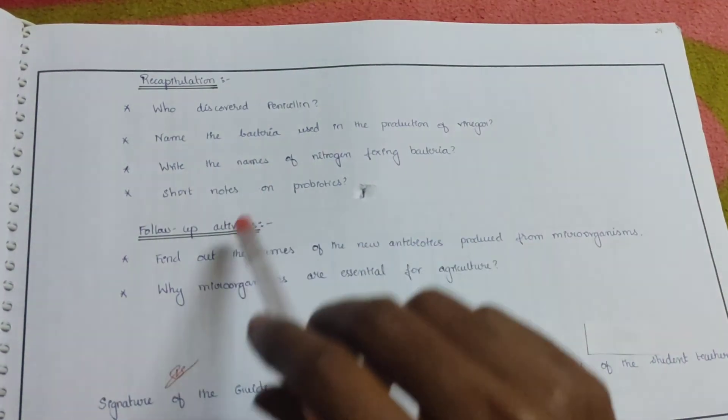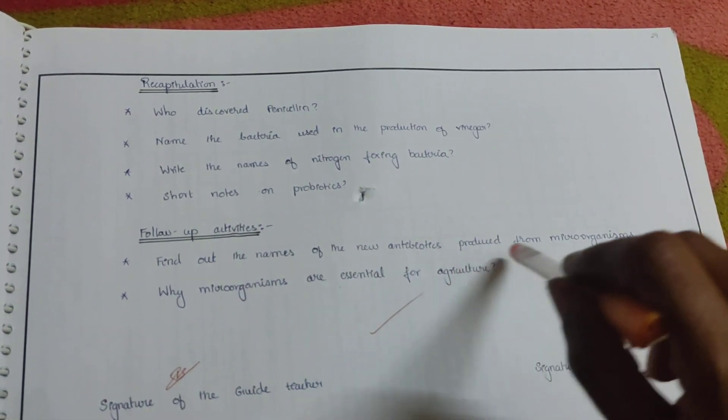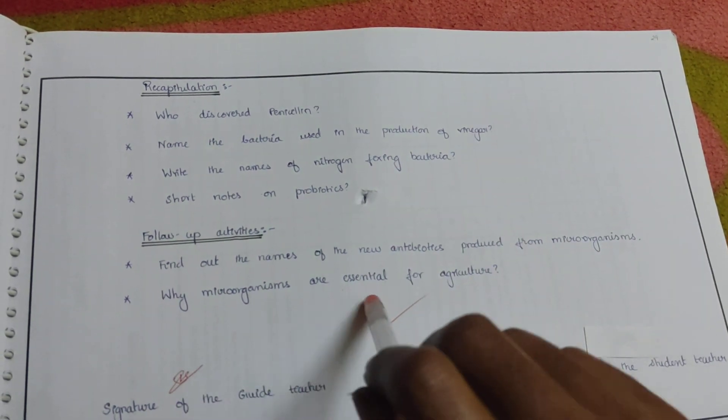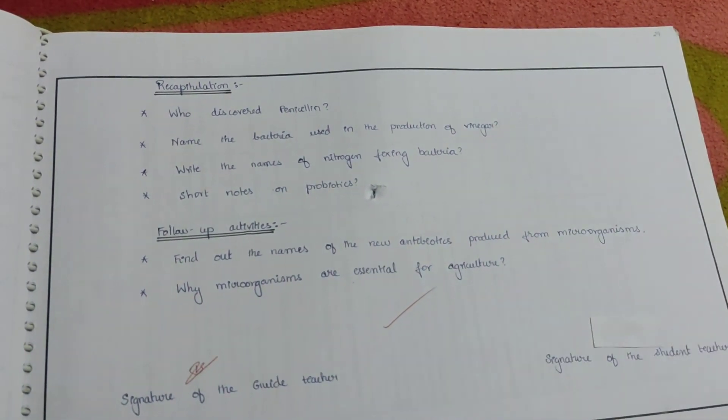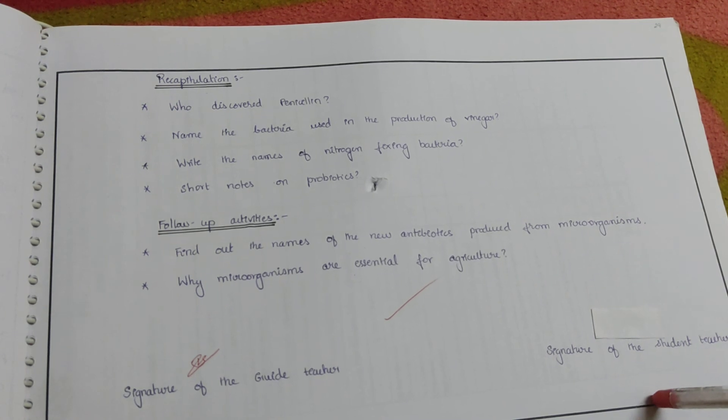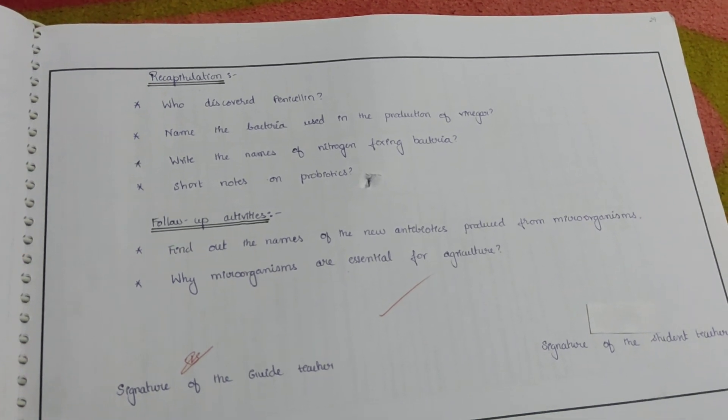Follow-up activities: find out the names of new antibiotics produced from microorganisms. Why microorganisms are essential for agriculture? Here as usual we end up with the signature. Thank you.